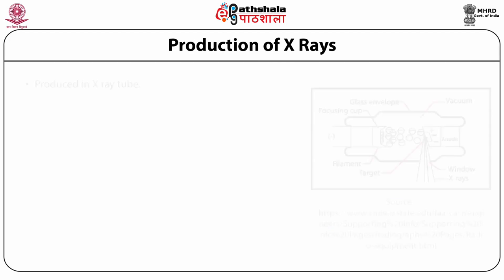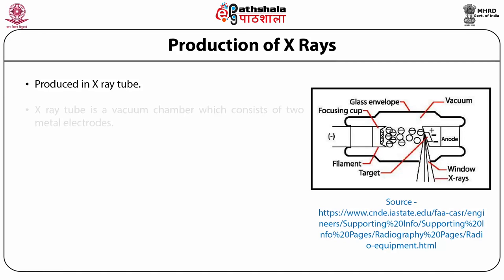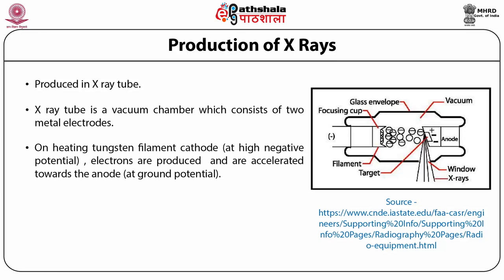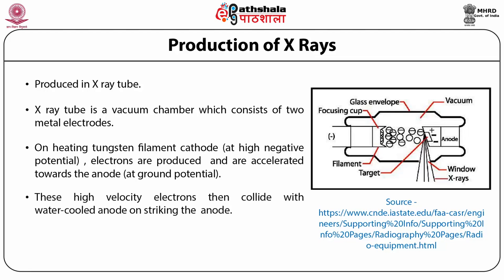The production of X-rays: X-rays are produced in an X-ray tube, which is a vacuum chamber consisting of two metal electrodes. On heating the tungsten filament cathode — present at high negative potential — electrons are produced and accelerated towards the anode at ground potential. These high-velocity electrons collide with the water-cooled anode. On striking the anode, loss of energy occurs, which is manifested as X-rays. Less than one percent of the electron beam is converted to X-rays; the rest is dissipated as heat in the metal anode. A diagram of the X-ray tube is shown on this slide.